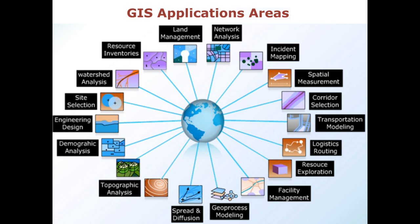Next, coming to GIS application areas. GIS is used in different applications in our day-to-day life, including: land management, network analysis, incident mapping, spatial measurement, corridor selection, transportation modeling, logistics routing, resource exploration, facility management, geoprocess modeling, spread and diffusion, topographic analysis, demographic analysis, engineering design, site selection, watershed analysis, and resource inventories.